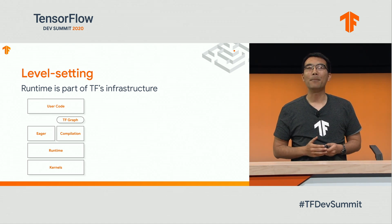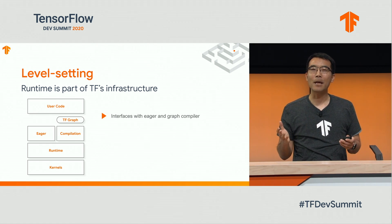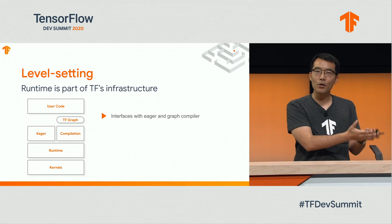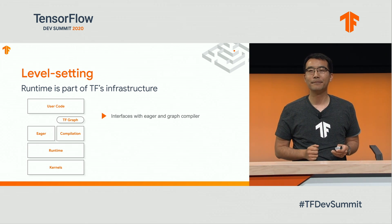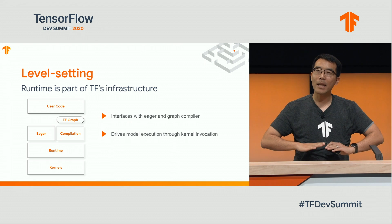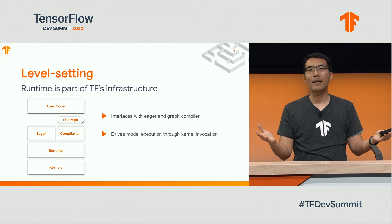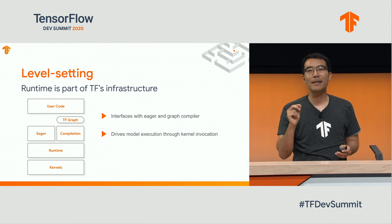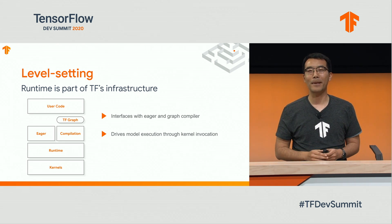Here's a diagram on the training workflow. Runtime can be driven by eager APIs. It can also execute graph programs produced by a graph compiler. Runtime is a low-level component that orchestrates all model execution by calling into the relevant kernels that implement machine learning primitives, like matrix multiplications.